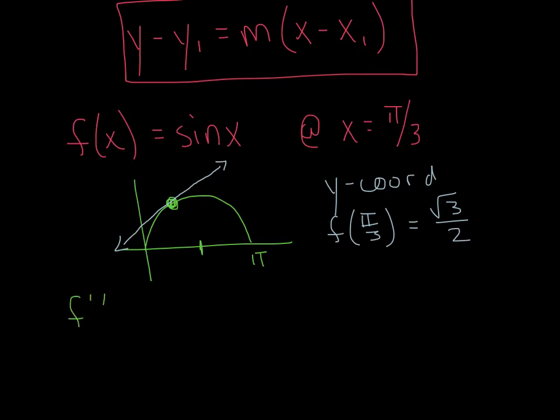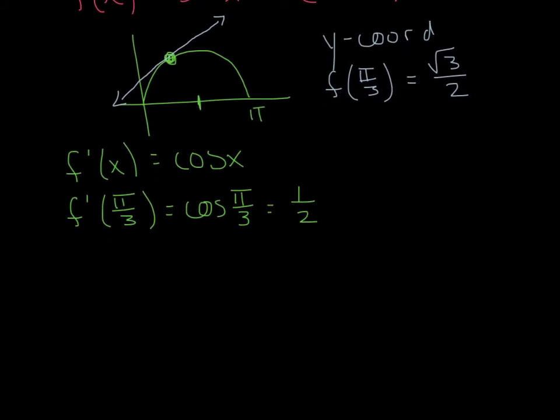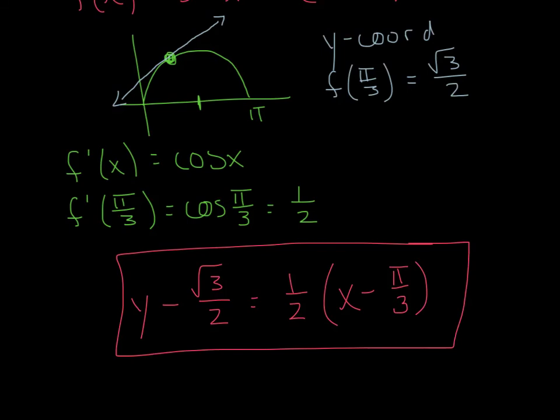To find the slope, I need to first find the derivative in terms of x, which in this case is the cosine of x. Now, I can evaluate that derivative at the instantaneous moment, pi over 3. And, the cosine of pi over 3, in this case, is 1 half. So, let's put all this information together. And, I'm going to say y minus radical 3 over 2 equals 1 half times the quantity x minus pi over 3. And, ladies and gentlemen, I'm going to stop right there. I'm not going to go any further than that. That's my final answer.